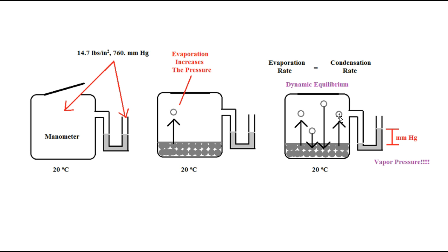Once it has filled that space up, for another molecule to go up and turn into gas, one of the gas molecules has to recondense. When this occurs, we have a maximum pressure inside. This is called dynamic equilibrium, because the rate of evaporating is the same as the rate of condensing — we're getting change but nothing really changes. Once that happens, we've increased the pressure, which has pushed the mercury over, and this height is the vapor pressure in millimeters of mercury.